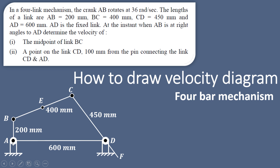The lengths of the links are: AB is 200 mm, BC is 400 mm, CD is 450 mm, and AD is 600 mm in length. At the instant when AB is at right angle to AD — so AB is shown perpendicular to the fixed link AD — we have to find out the velocity of the midpoint of link BC. BC is the coupler link and its midpoint is called E.